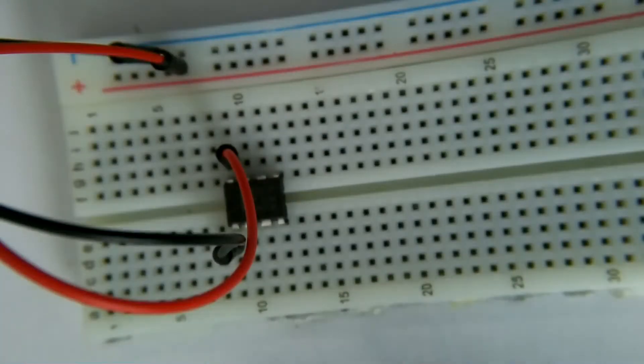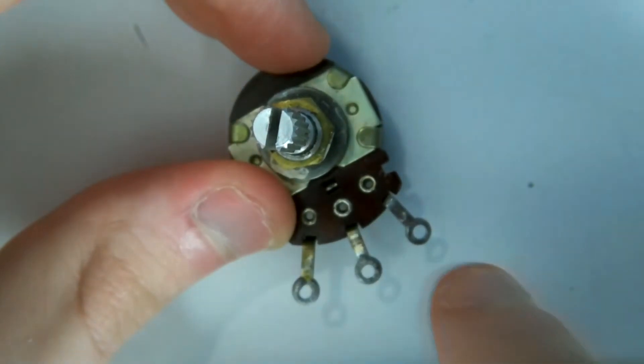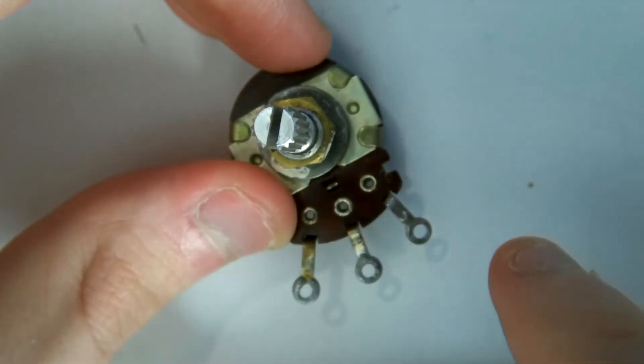If we want to be able to vary our output, what we can use is a potentiometer. Potentiometers are essentially variable resistors. The knob controls a wiper that moves across a resistive surface.